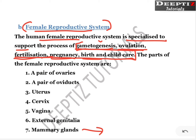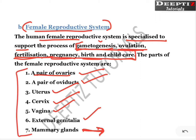So, which are the parts? A pair of ovaries, oviducts, uterus, cervix, vagina, external genitalia, and mammary glands. These all parts together form the female reproductive system.